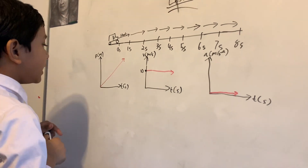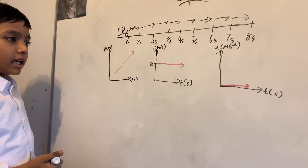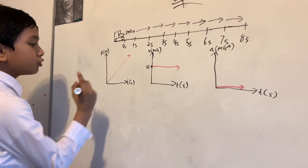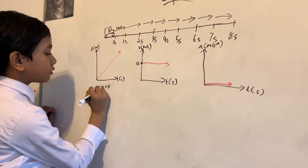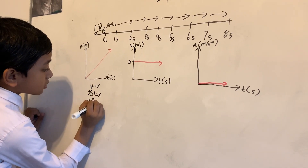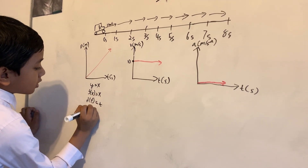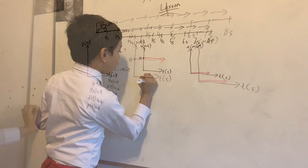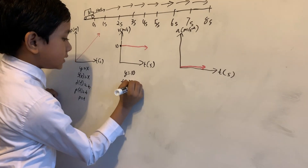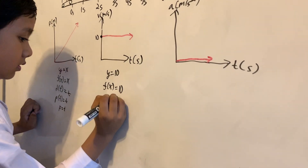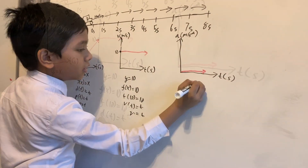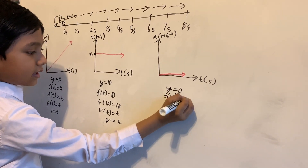p of t would be linear — that's y equals x, because there's no acceleration, no coefficient. Just y equals x. Some other ways to write this: y equals 10. For acceleration, f of x is zero.